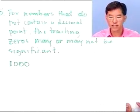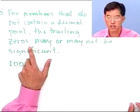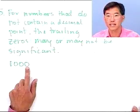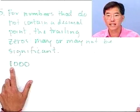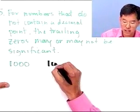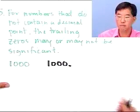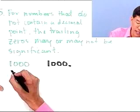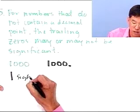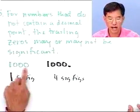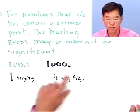Finally, for numbers that do not contain a decimal point, trailing zeros may or may not be significant. A number like 1,000 could have one significant figure or four — there's some ambiguity. One convention is that placing a decimal point after the last zero makes all digits significant (four sig figs), while without a decimal point only the non-zero number is significant (one sig fig). When we discuss scientific notation, we'll have a way to write such numbers with absolutely no ambiguity.